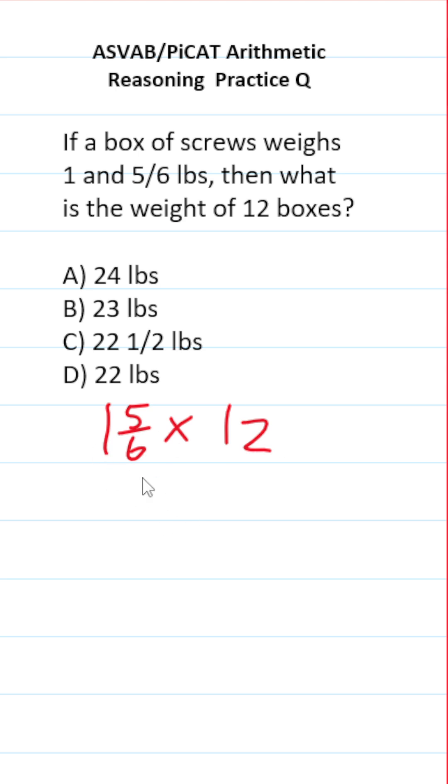So to solve this one, we got to start by converting 1 and 5/6 to an improper fraction. We're going to do 1 times 6, which is 6 plus 5, which is 11. So this is 11 over 6 times 12.